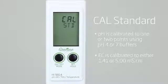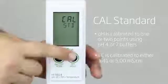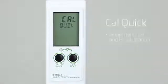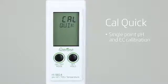Growline offers two types of calibration: Cal standard and Cal quick. Cal quick is used with Hannah's quick calibration solution that is for a single point pH and EC calibration.